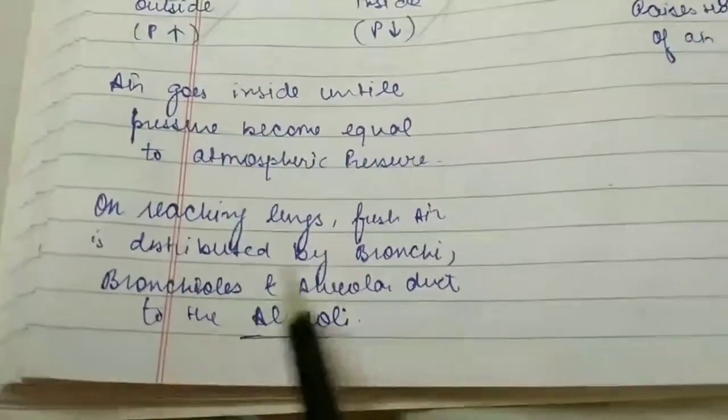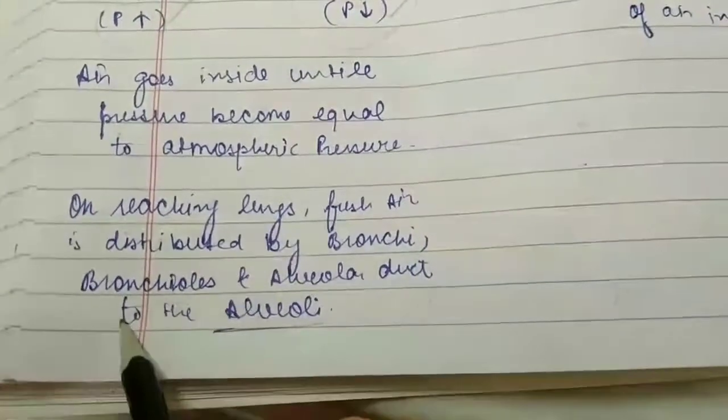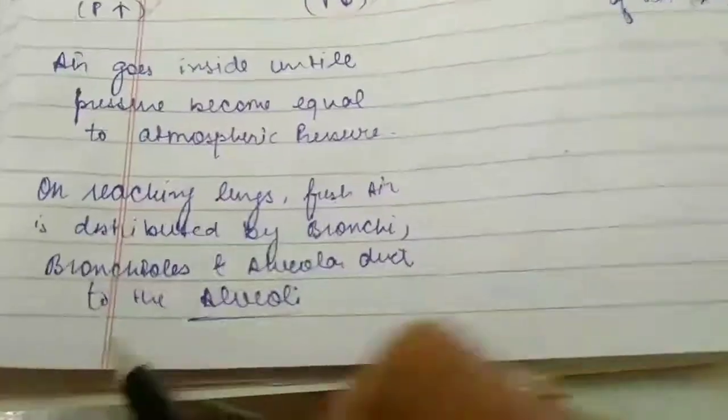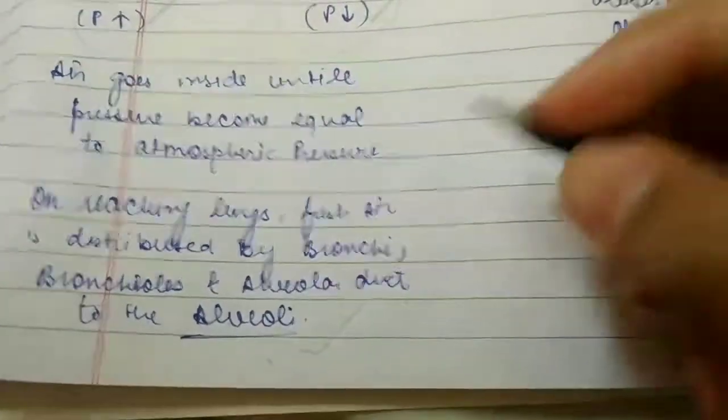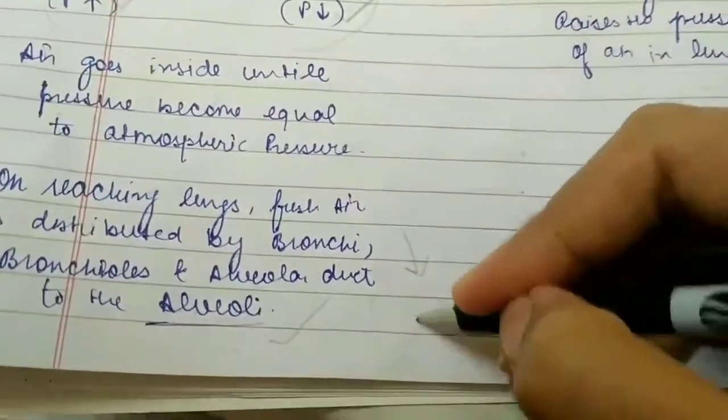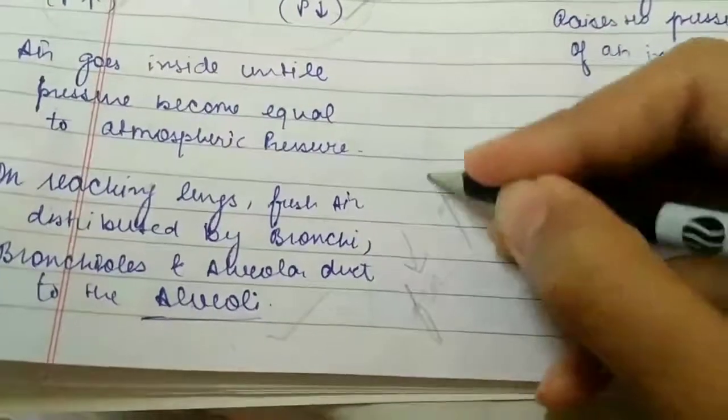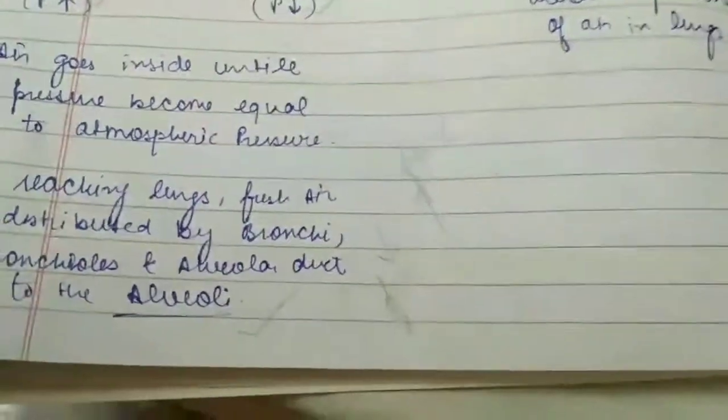On reaching the lungs, fresh air is distributed by bronchi to bronchioles, then to alveolar duct to the alveoli where exchange of gases takes place. Hence, fresh air comes in and foul air comes out. Similarly, internal intercostal muscles work during expiration.